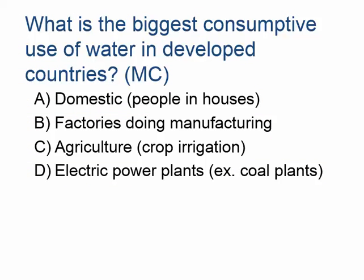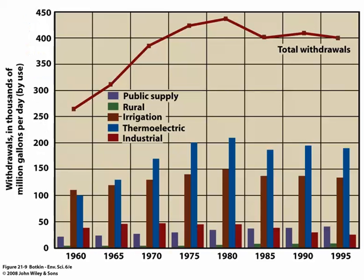So what is the biggest consumptive use of water in developed countries? If you said agriculture, you're correct. Agriculture is shown in red. You might be wondering what the blue is — blue is thermoelectric cooling. It's pulling water in from a river or ocean to cool an electric power plant as part of the electric power generation process.